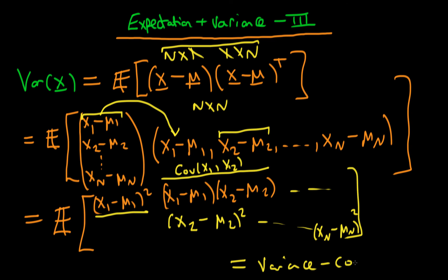In the next video, I'm just going to complete our discussion of the variance operator by explaining what the variance of a constant matrix A times a random vector x is equal to.